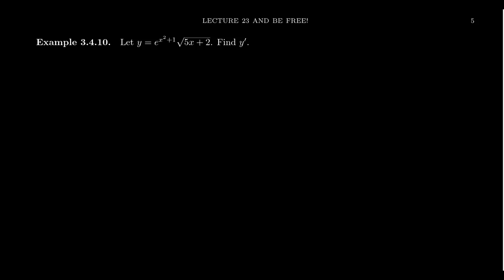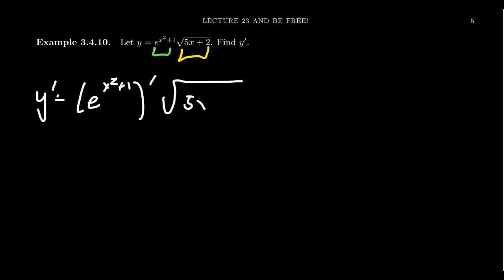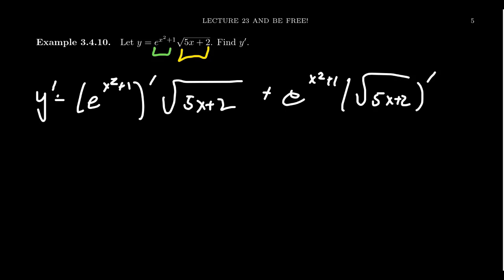Let's take a look at one last example. Give it a good try before you see me do it. We want to calculate the derivative of y equals e to the (x squared plus 1) times the square root of (5x plus 2). We can see there are products and compositions of functions. Pause the video and give it a try yourself. Trying this together: we have a product of two things — the exponential function times the square root function. So first we use the product rule. y prime equals the derivative of e^(x²+1) times √(5x+2), plus e^(x²+1) times the derivative of √(5x+2).